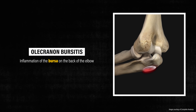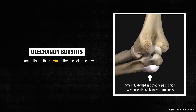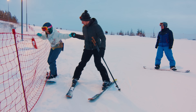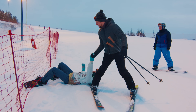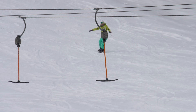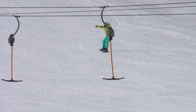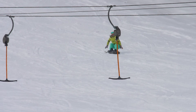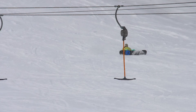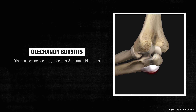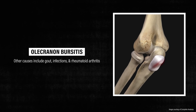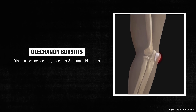Olecranon bursitis refers to inflammation of the bursa on the back of the elbow. A bursa is a small fluid-filled sac that helps cushion and reduce friction between structures. Olecranon bursitis may occur following minor trauma or sustained pressure to the area — for example, repeatedly falling on the elbow while snowboarding. Other causes include gout, infections, and rheumatoid arthritis.